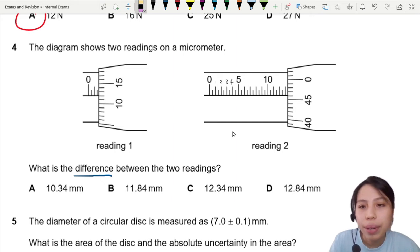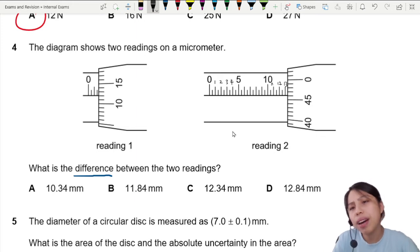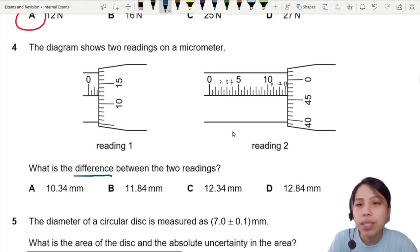Okay, so let's read the right one. This will be 10, 11, 12, 13. Not yet 0.5, almost there. So there's 13 millimeters over there.